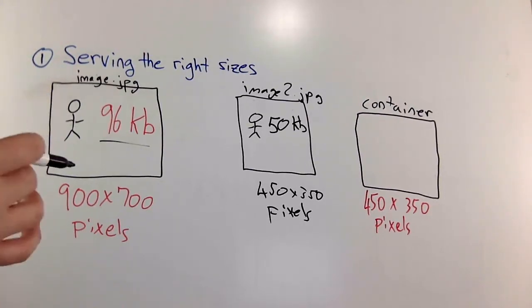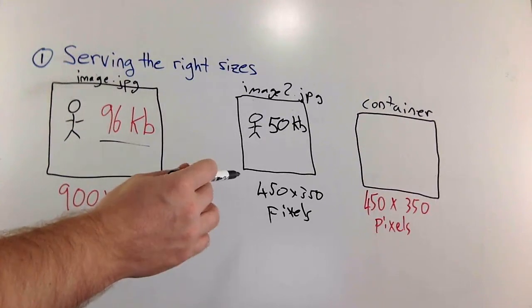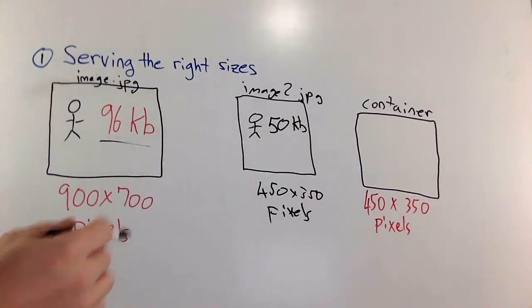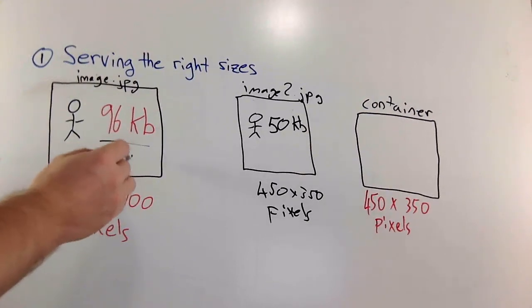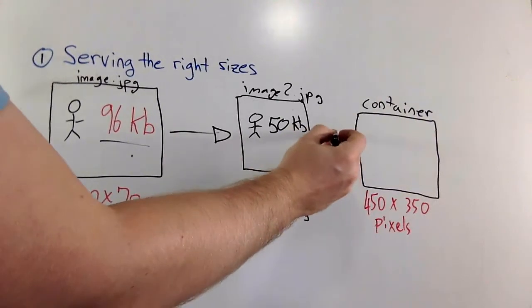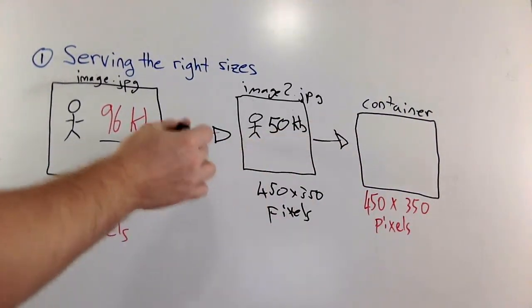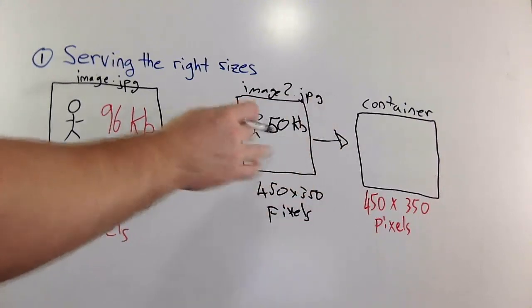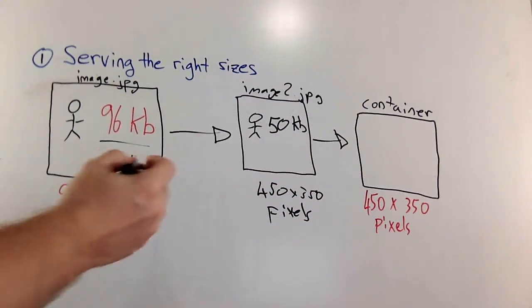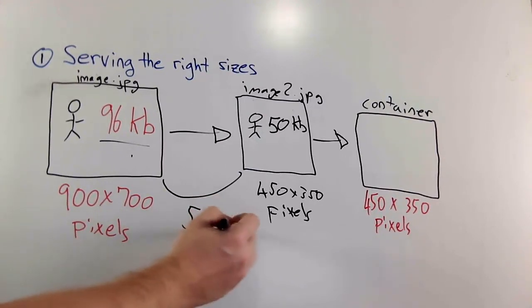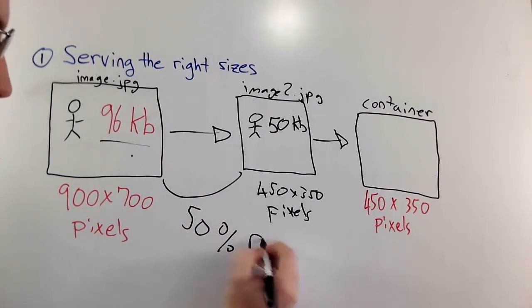So now, instead of when the user goes to your browser and requests for this image inside of this container, instead of loading this image that's 96 kilobytes, we're only transferring the 50 kilobytes. So you're not even getting this request here. It's going to be requesting this file immediately. And you're reducing your bandwidth by 50% on this image alone.